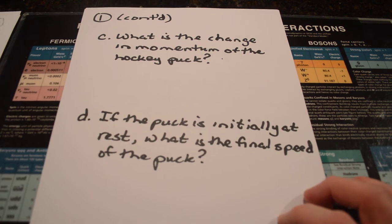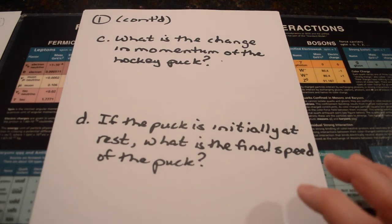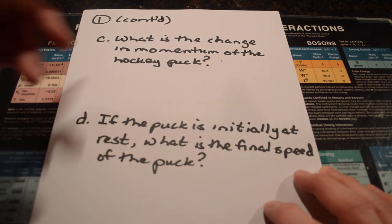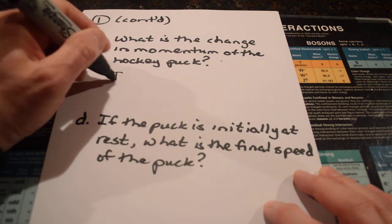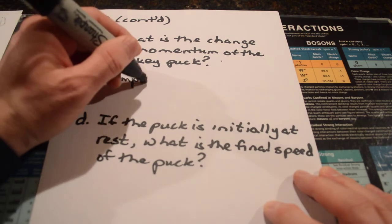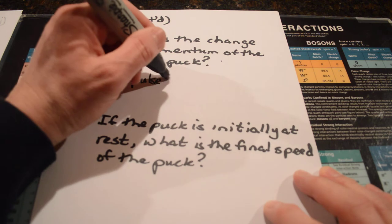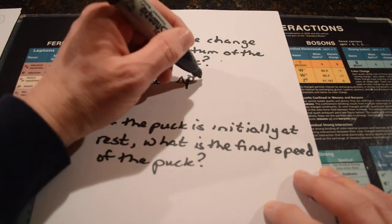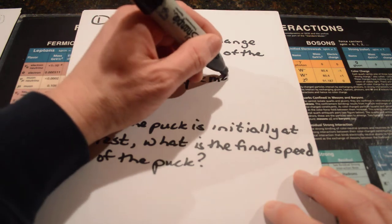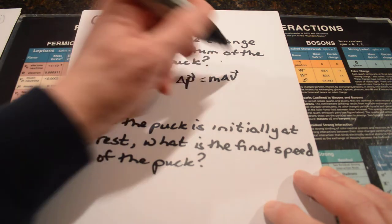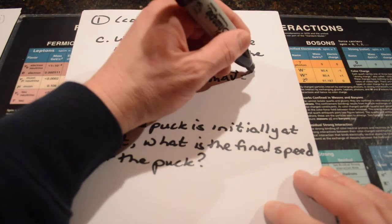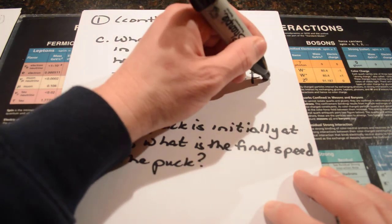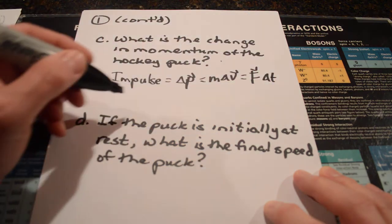Next question, same situation. What is the change in momentum of the hockey puck? Well, that was the other way of finding what the impulse is. That would be equal to the change in momentum. So, that's the other way, which would be the mass times the change in velocity. But, that's also still equal to the force multiplied by the change in time, which we already calculated.